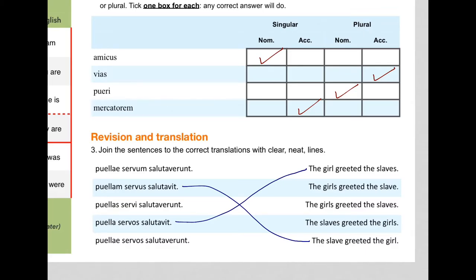The other three are all they greeted. This one. We've got the girls are nominative. And that's the accusative singular. So the girls greeted the slave. Let's put that in. One slave there. So that's that one.